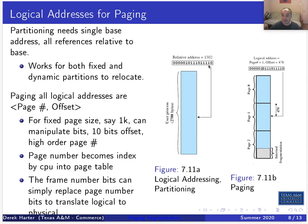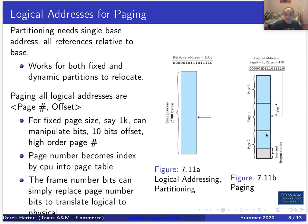If you understand that, the logical-to-physical address translation for a paging system becomes fairly straightforward. For a partitioning system, you simply had a base address register and added offsets to get the physical address. For a paging system it works similarly, just with the added page table lookup step.